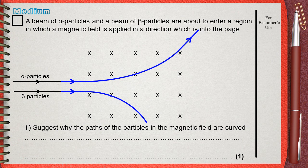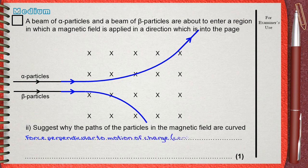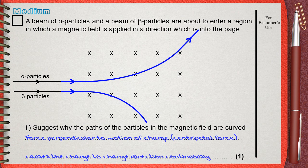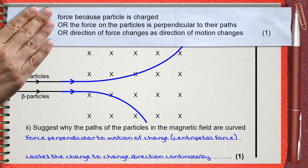So simply we can say that force perpendicular to motion of charge, centripetal force, causes the charge to change direction continuously. That's why it moves in a curve. The one mark is for force